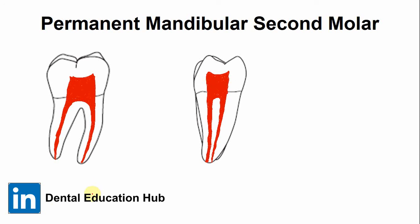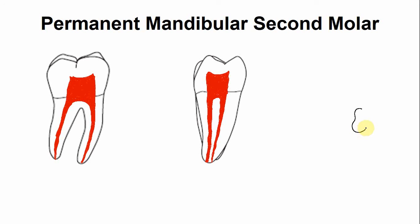Now let's discuss the mid-root section. The mesial root is slightly larger and oval to kidney shape as compared to the distal root, which is oval and slightly smaller. The mesial root has two canals — mesiobuccal and mesiolingual — which are rounded in shape, while the distal root usually has a single canal which is large oval to rounded in shape.